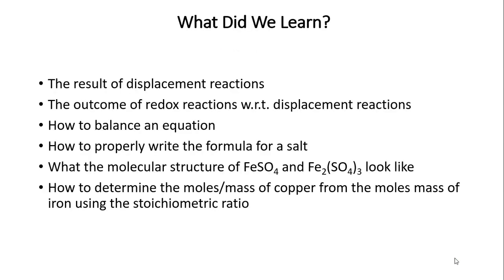In summary, we learned that displacement reactions happen when you add a metal to a solution and the metals swap. We learned about the outcome of redox reactions with respect to displacement reactions, balanced some equations, wrote formulas using the crisscross method, and looked at the molecular structures of iron two sulfate and iron three sulfate. We also learned how to determine the moles and mass of copper expected — the theoretical yield — from the mass of iron using the stoichiometric ratio.